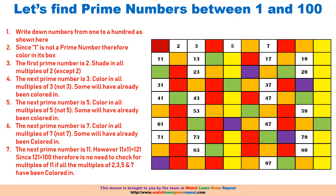Now all the numbers that are left uncolored are your prime numbers. So the prime numbers between 1 and 100 are: 2, 3, 5, 7, 11, 13, 17, 19...